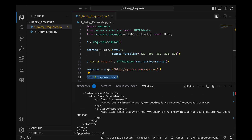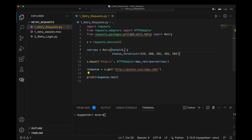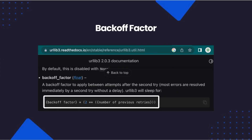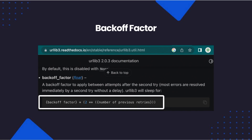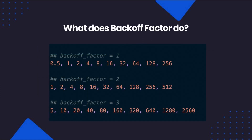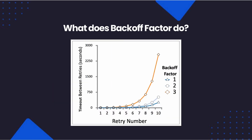We can also define a backoff strategy using the backoff factor attribute. Here is the backoff algorithm, and here are some example sleep sequences. Using the backoff factor, we can configure our script to exponentially increase the timeout between each retry.